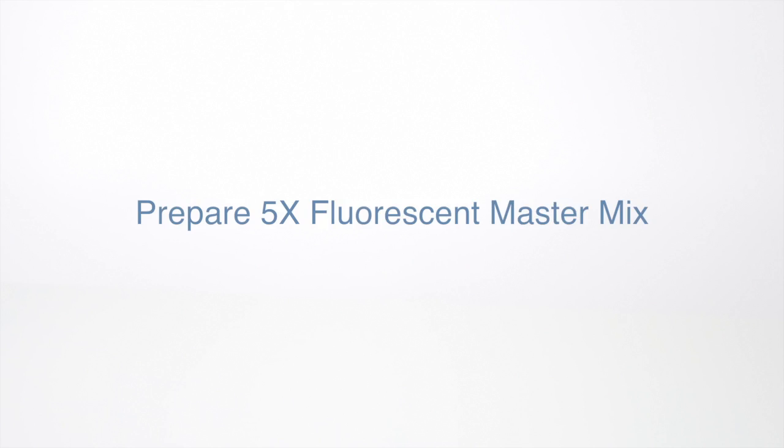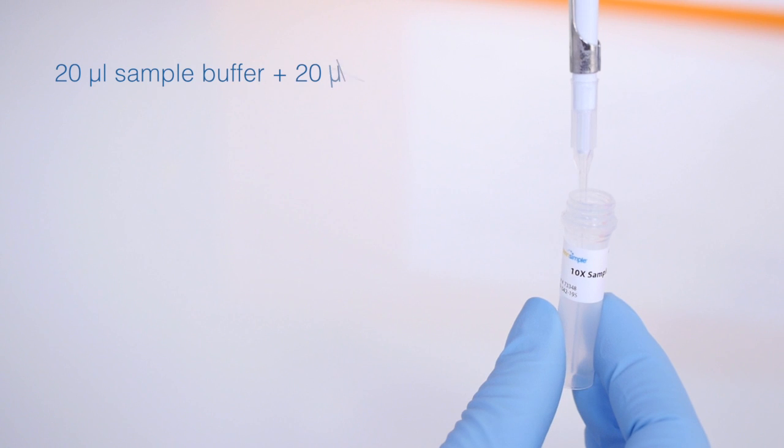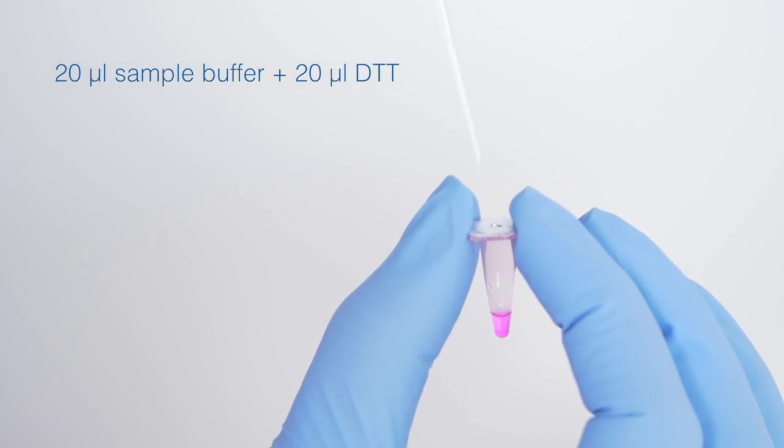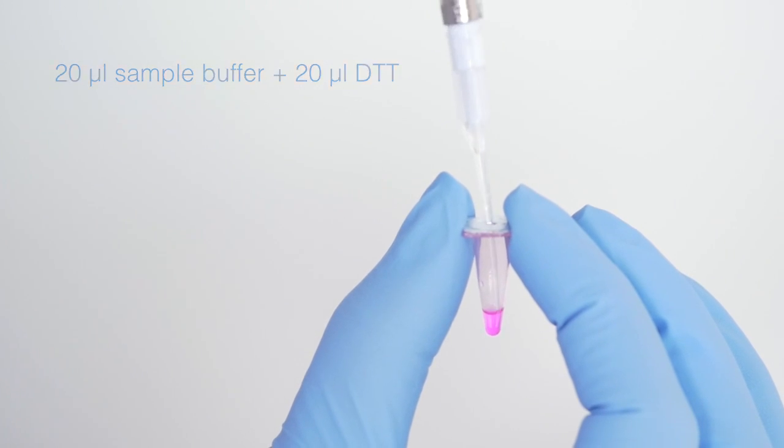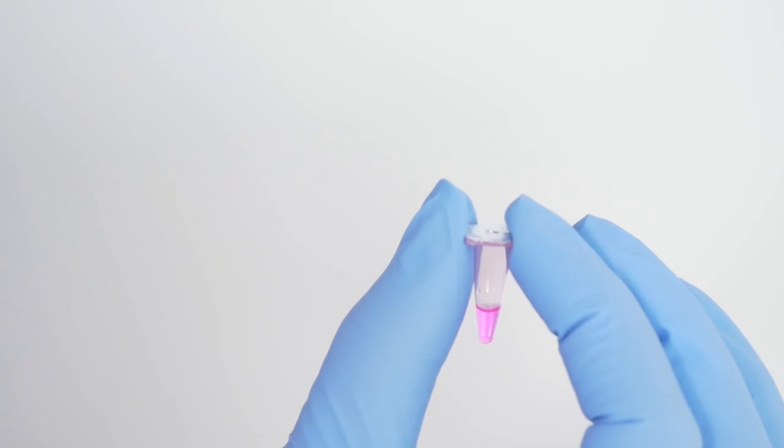Next, we'll prepare the 5X Fluorescent Master Mix. Pipette 20 microliters of the 10X sample buffer into the pink tube and add 20 microliters of the DTT solution you just prepared. Gently mix by pipetting up and down a few times. Now you've got your Fluorescent Master Mix.